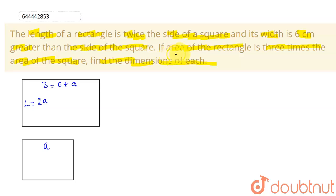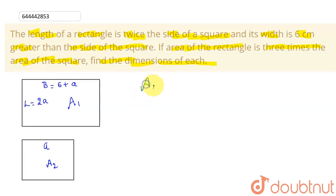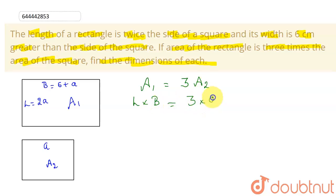Let us denote the area of the rectangle as A1 and the area of the square as A2. We are given that A1 is three times A2. The formula for area of the square is a², the length of the rectangle is 2a, and the breadth is 6 + a.